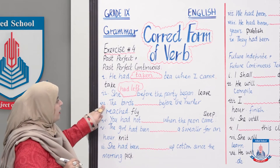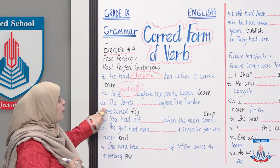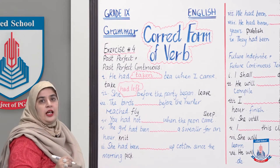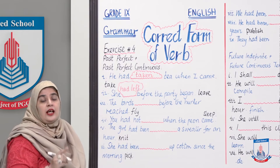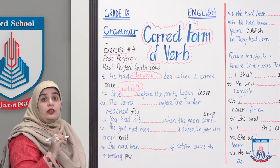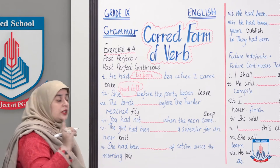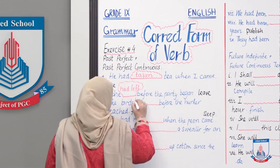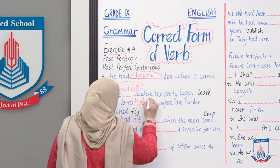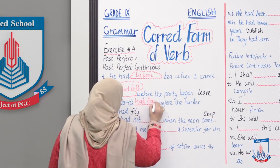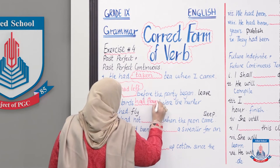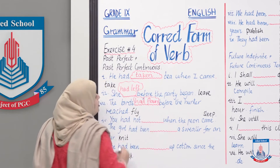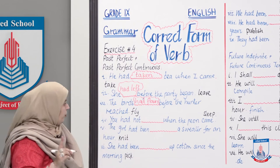'The birds ___ before the hunter reached.' The birds had already flown — somehow they had the intuition that the hunter was about to come, so they had already flown away. Answer: 'The birds had flown before the hunter reached.'